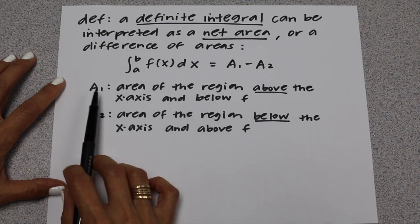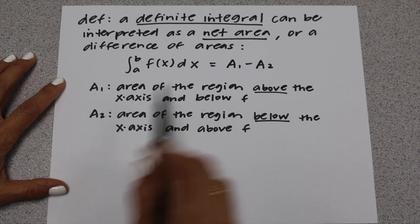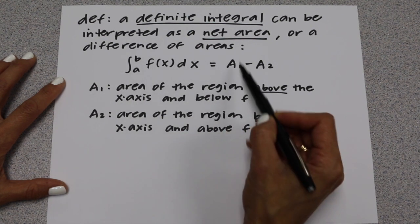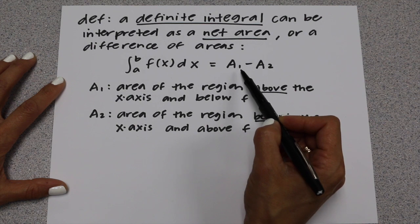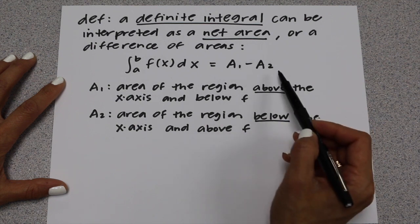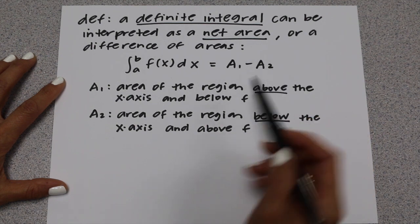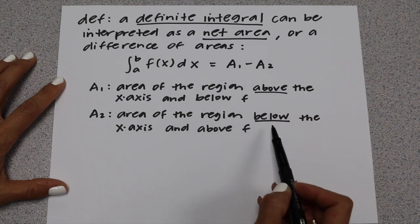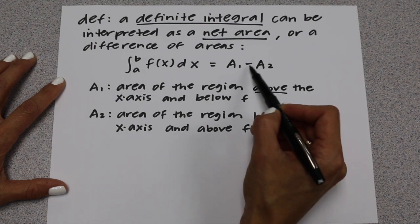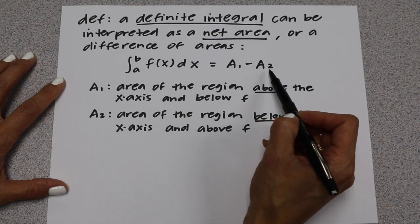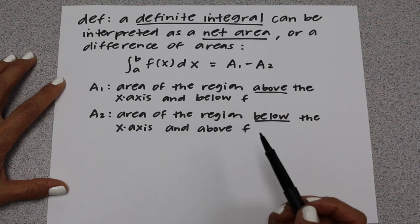The big thing with A₁ and A₂ is you're going to find the area for A₁, and then find the area for anything below the x-axis, but you're going to subtract that part in your answer.